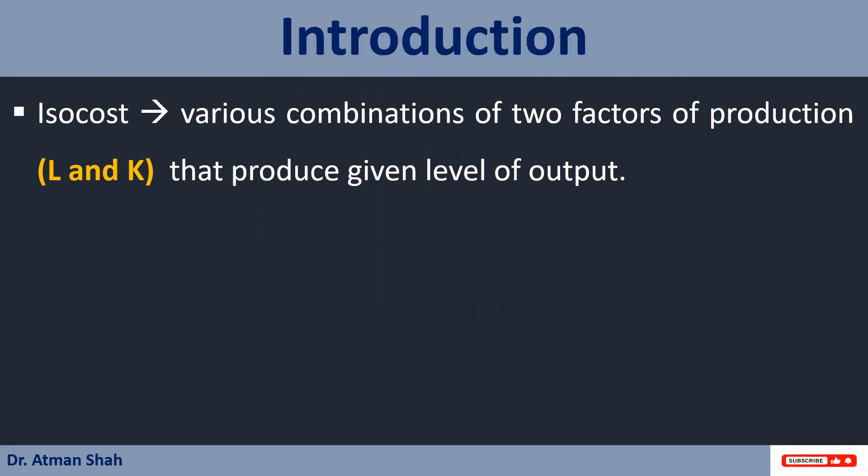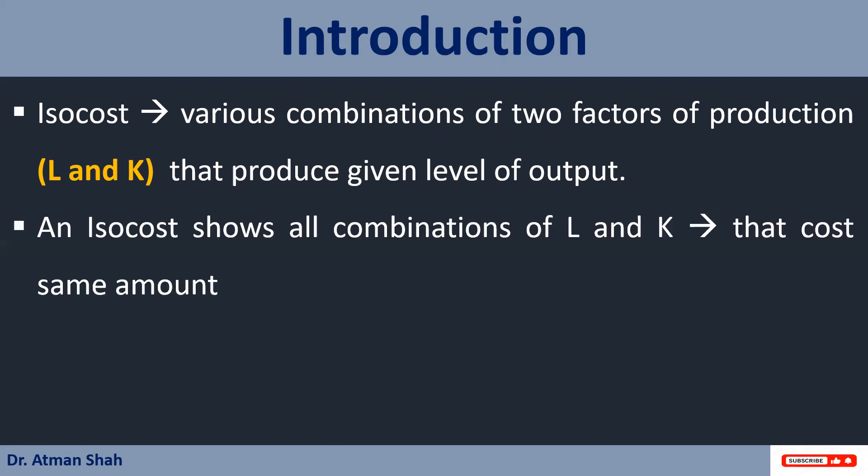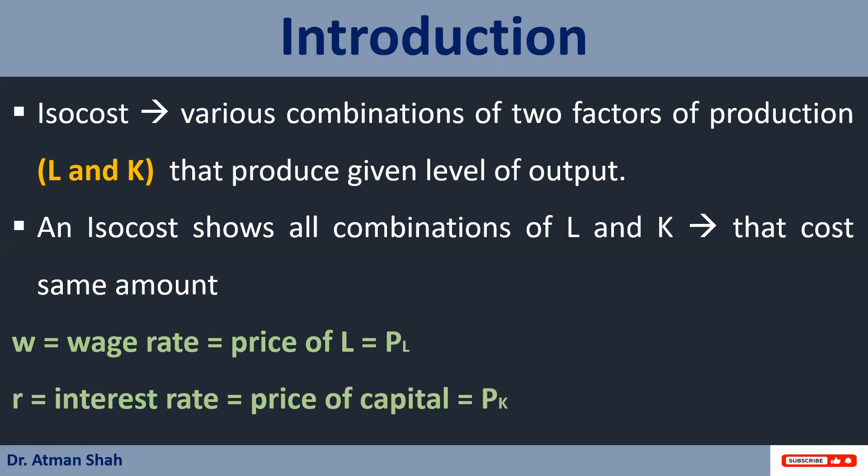Isocost line shows the various combinations of two factors of production, that is labor and capital, that produce given level of output. So it shows all combinations of labor and capital that cost same output. So cost on isocost line remains same. Suppose price of labor is W, that is wage rate, and price of capital is R, that is interest rate.